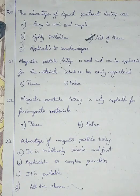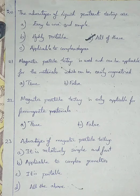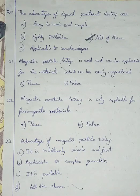Magnetic particle testing. Question number 21. Magnetic particle testing is used and can be applicable for materials which can be easily magnetized — true or false? Magnetic particle testing is applicable only for materials that can be easily magnetized. So I am going with option A, true.